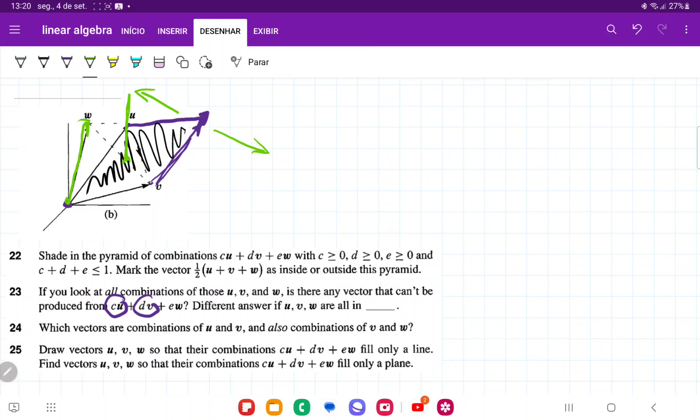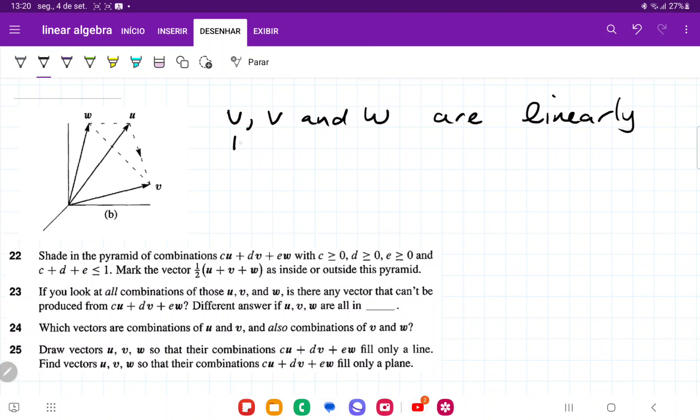So, think of like taking this plane, this u and v, and moving it up and down. So, if we take this infinite plane, and we can move it up and down because of w, that means that we can definitely access all of 3D space, right? So, we can say here that u, v, and w are linearly independent.